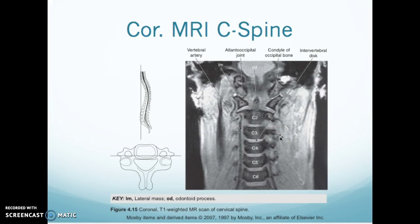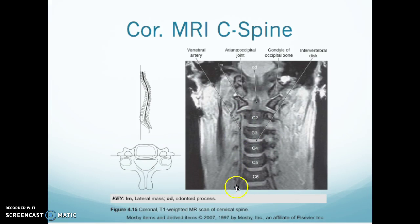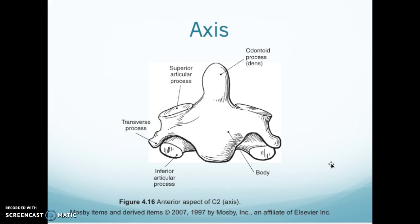This is an MRI showing your odontoid and the lateral mass of C1. Here's C2, 3, 4, 5, 6, and you have to get through C7-T1, just like on an x-ray. When working in CT and MRI, you still need to get down to the C7-T1 disc space. You can see the disc in here — this is a great shot of the vertebral artery running through the vertebral foramen. You can see the transverse process there.